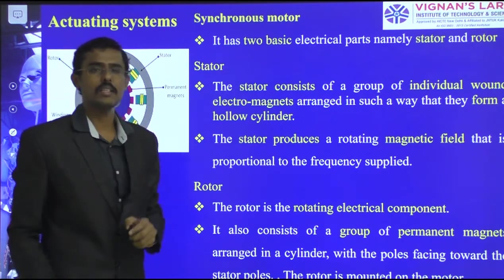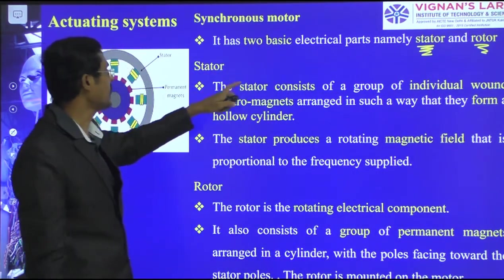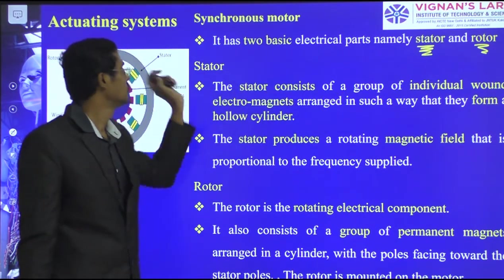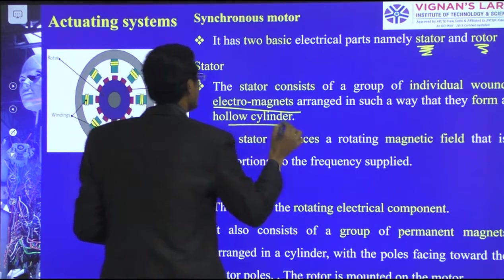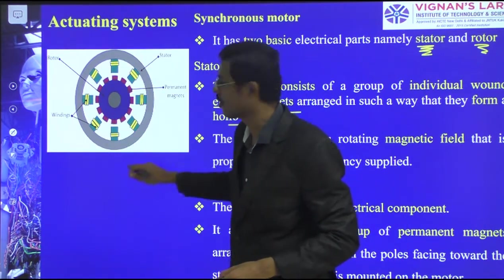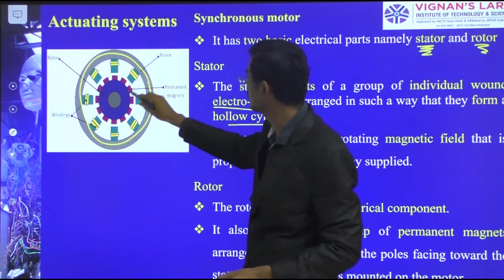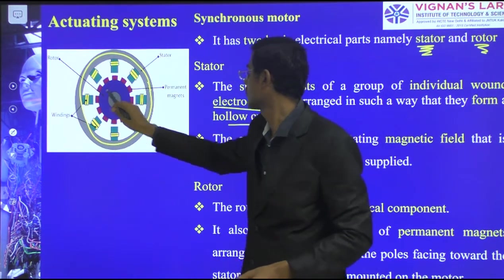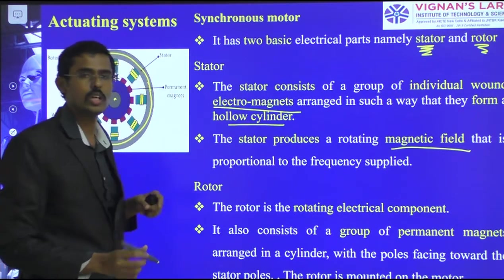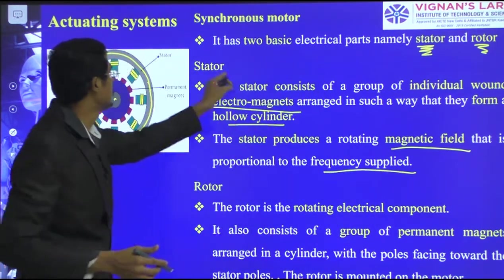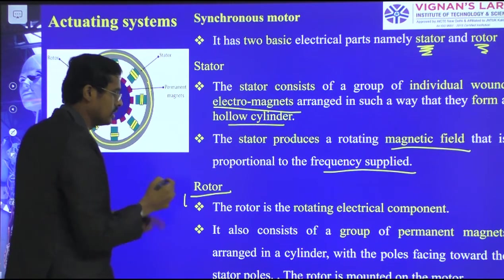It has two basic electrical parts: stator and rotor. The stator consists of a group of individual wound electromagnet arrangements forming a hollow cylinder. Inside the cylinder we have the rotor, and at the center of the rotor we have the shaft connection. The stator produces a rotating magnetic field proportional to the frequency supplied. This causes the shaft and rotor to rotate.